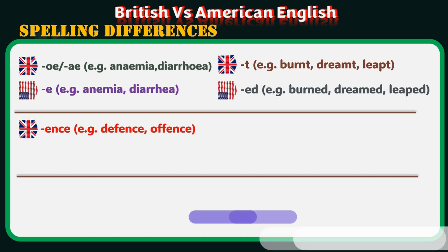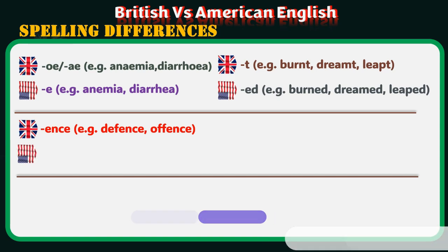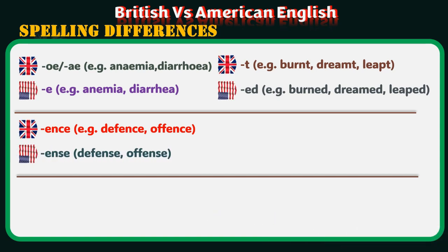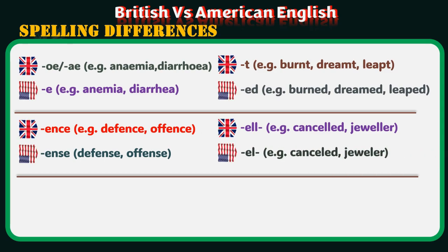British ends with INCE — examples: defence, offence, licence. American ends with ENSE — examples: defense, offense, license. British ends with double L — examples: cancelled, jeweller, marvellous. American ends with single L — examples: canceled, jeweler, marvelous.